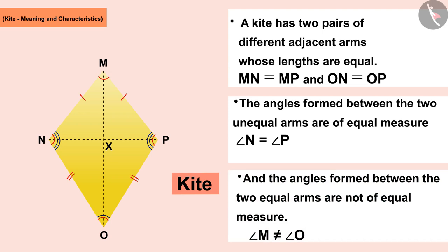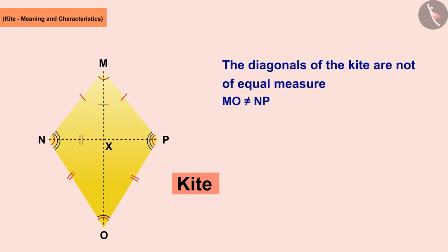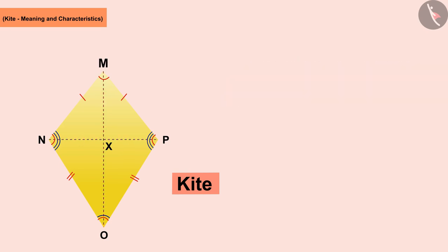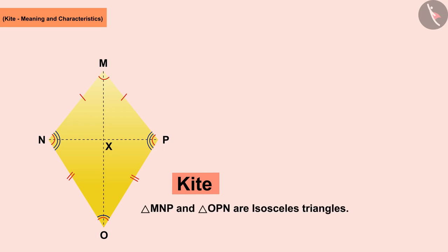Let us discuss one more important fact. You can see that both diagonals of the kite are not of equal measure. Now if we look at triangles MNP and OPN, we can see that both these triangles are isosceles triangles, because each triangle has two sides of equal measure.